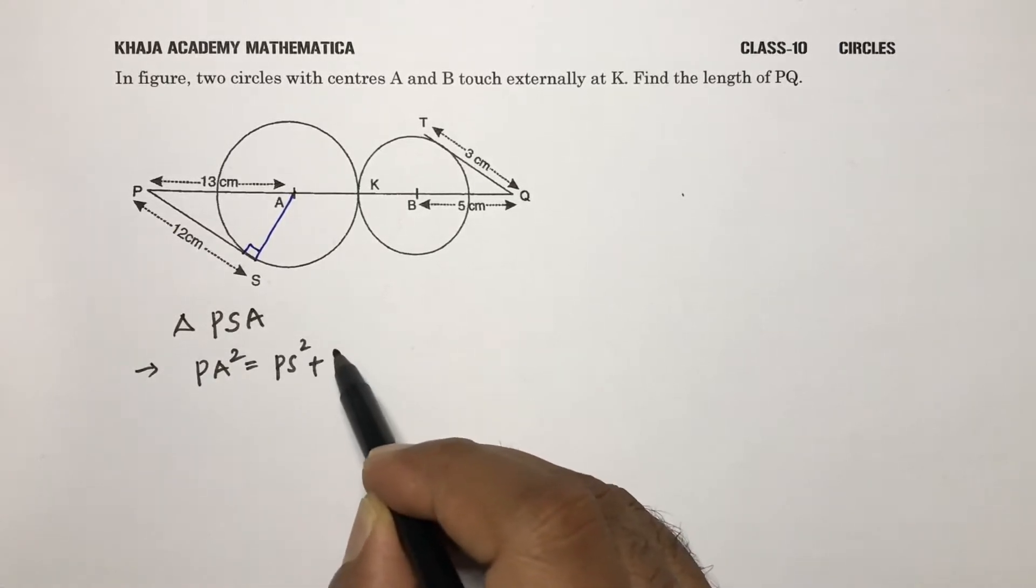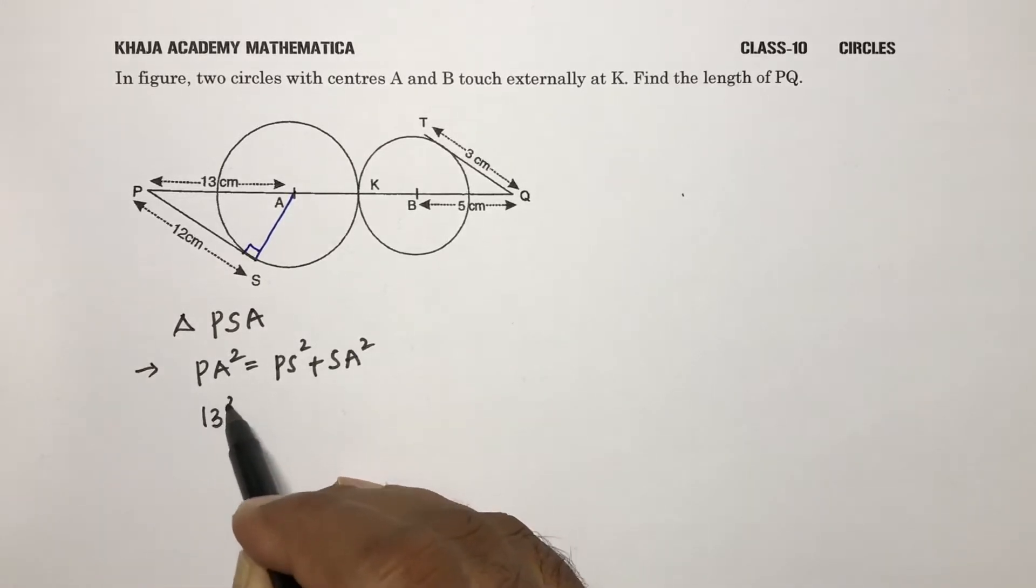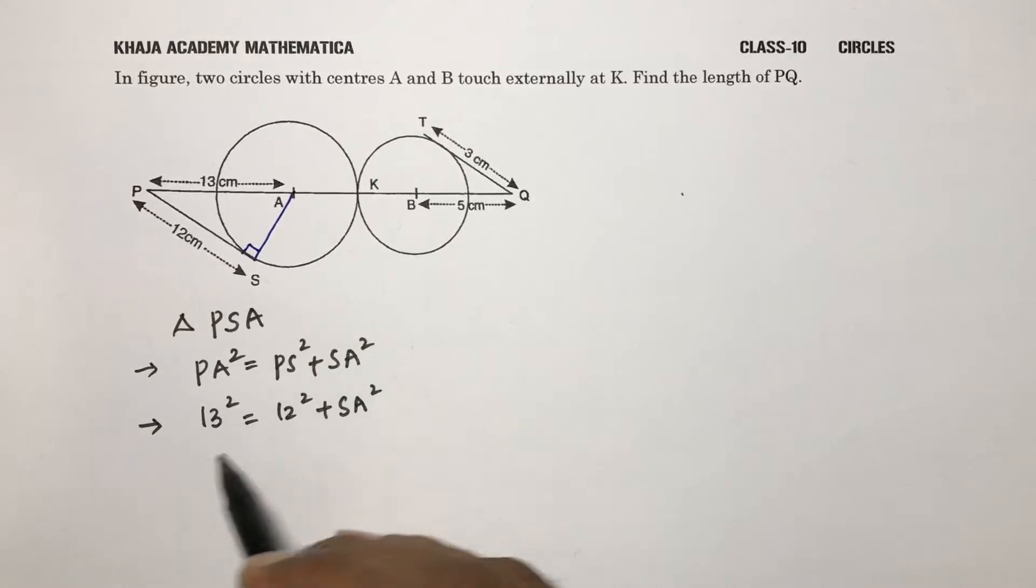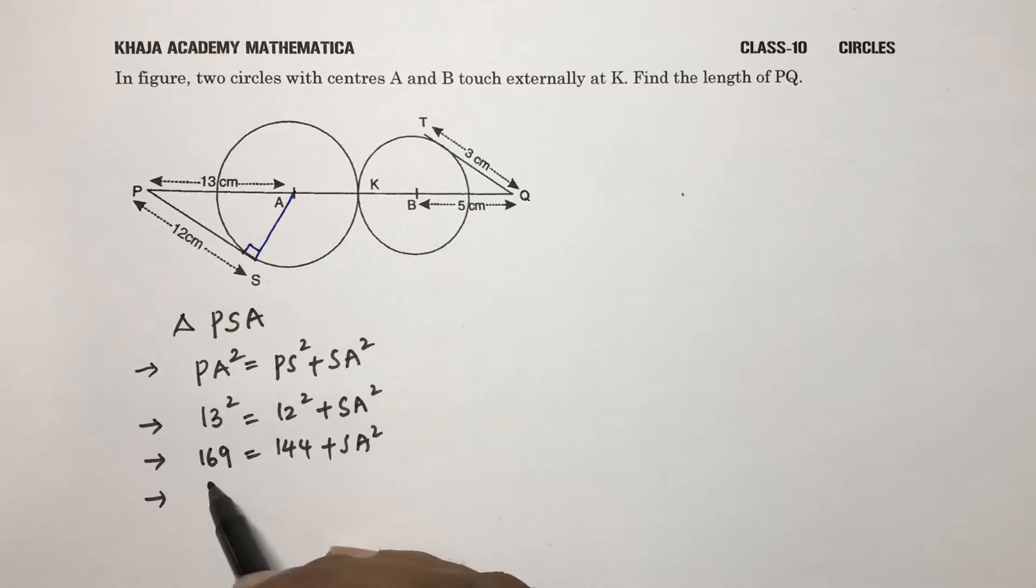PA is 13, so 13 square. PS is 12 square plus SA square. So PA is 13 square which is 169, 12 square is 144 plus SA square. So 169 minus 144 is SA square.